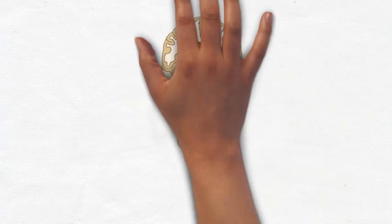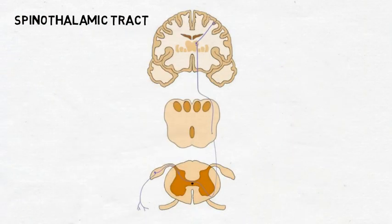The spinothalamic tract can be considered the main pathway for transmitting pain information to the cerebral cortex. It is involved in the awareness and recognition of where in the body a painful stimulus is occurring.